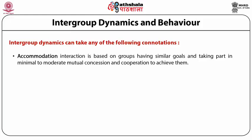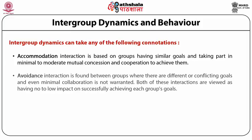When the group adopts an accommodating nature, the interaction is based on having similar goals and taking part in minimal to moderate mutual concession and cooperation to achieve them — members are inclined towards accommodating each other by not disagreeing on any matter. The second connotation is avoidance — this interaction is found between groups where there are different or conflicting goals and even minimal collaboration is not warranted.